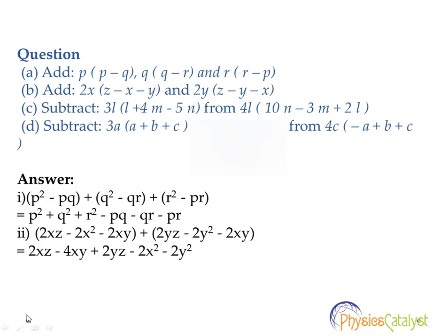Again, addition will not change any sign, so opening the bracket we get 2xz-4xy. 4xy comes because we have two terms, -2xy and -2xy, which add to -4xy.